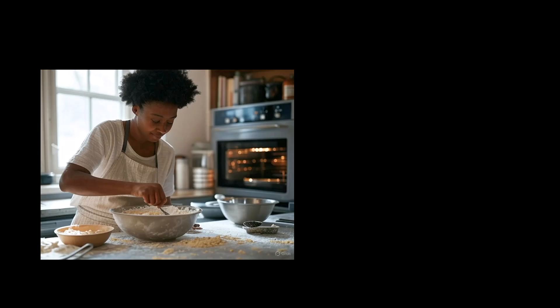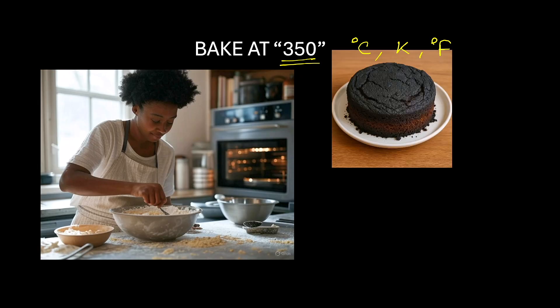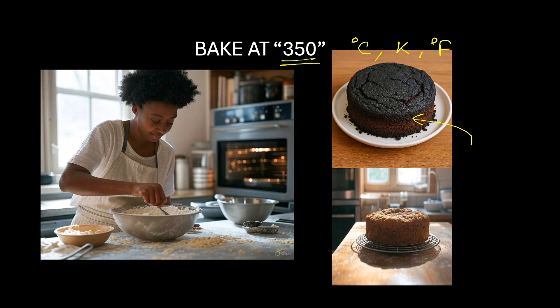Imagine you're baking a cake and the recipe simply says, bake at 350. It doesn't mention anything about the units, whether it's degree Celsius, Kelvin, or degree Fahrenheit. Confusing, right? Use the wrong one and you might end up making a burnt mess instead of a delicious cake.